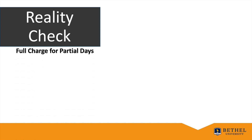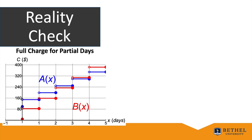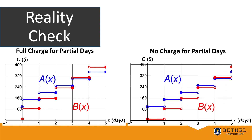To end Lesson 1.1 with a reality check: the linear formulas we derived don't work for all x in the car rental application. The main issue is how partial days are charged. If there's a full charge for partial days, then A(x) and B(x) are step functions, and B(x) becomes bigger than A(x) once x is strictly greater than 3 days. If there's no charge for partial days, B(x) only exceeds A(x) when x is greater than or equal to 4 days. The answer depends on the real-world billing policy.